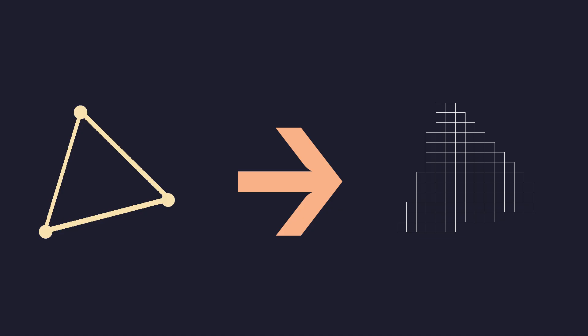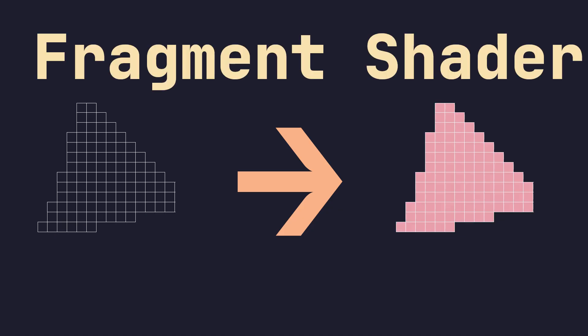Then we move on to the fragment shader. The fragment shader is run for each pixel — called a fragment in OpenGL terminology. For each fragment, the fragment shader specifies what color that fragment should be on screen. Currently we are going to write a constant color in there, but fragment shaders can do a lot of lighting calculations and other stuff as we'll see in the future.